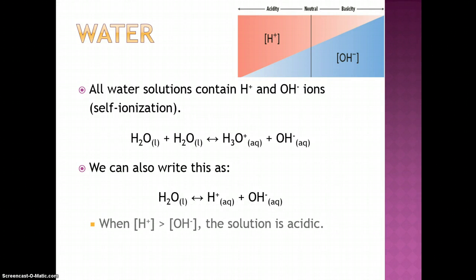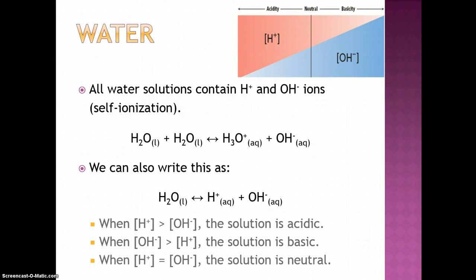An acidic solution contains more hydrogen ions than hydroxide ions. A neutral solution contains equal concentrations of both ions.